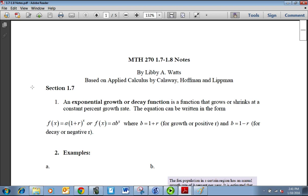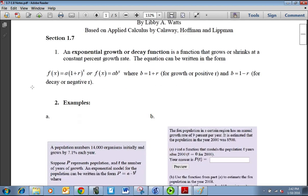An exponential growth or decay function is a function that grows or shrinks at a constant percent growth rate. The equation can be written as f(x) = a(1 + r)^x, or just f(x) = ab^x, where b equals 1 plus r for growth or positive r, and b equals 1 minus r for decay or negative r.